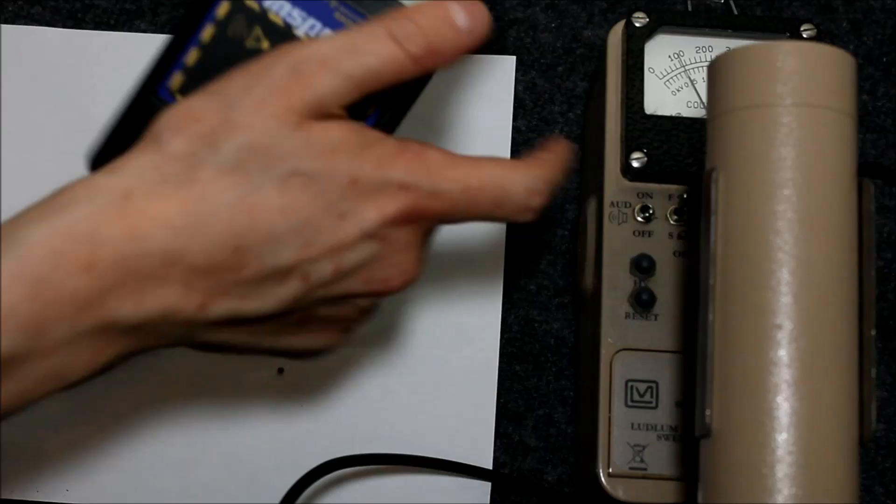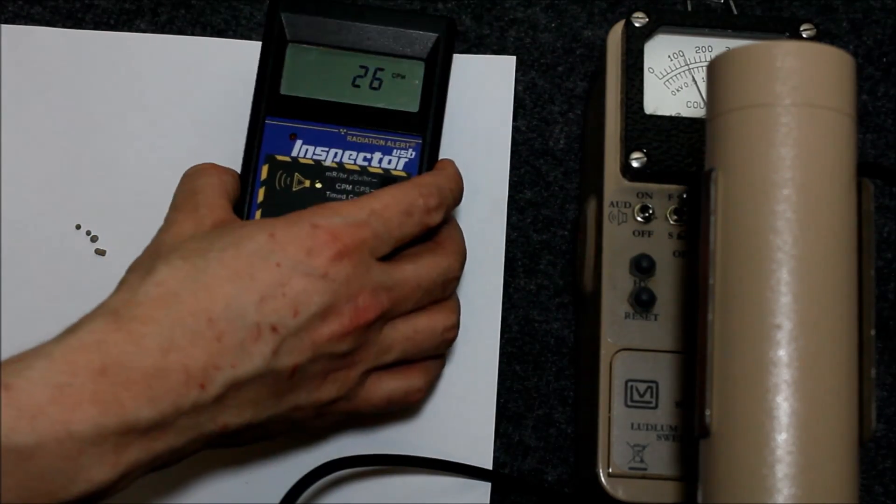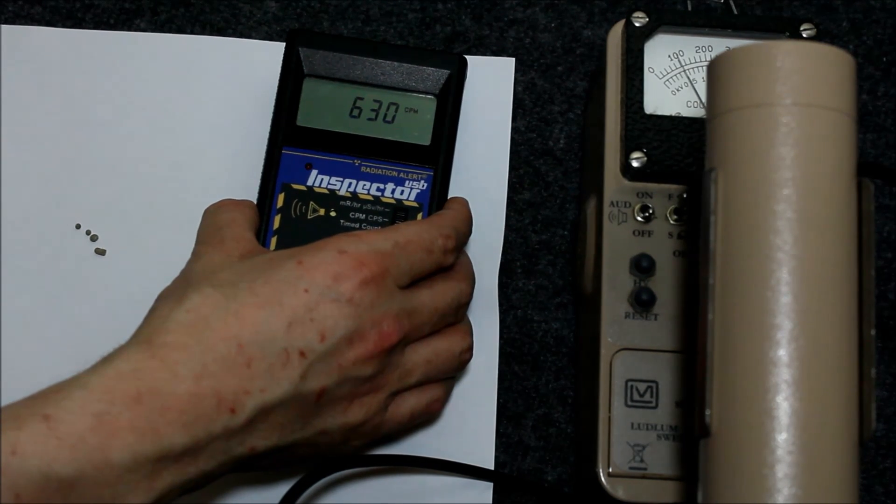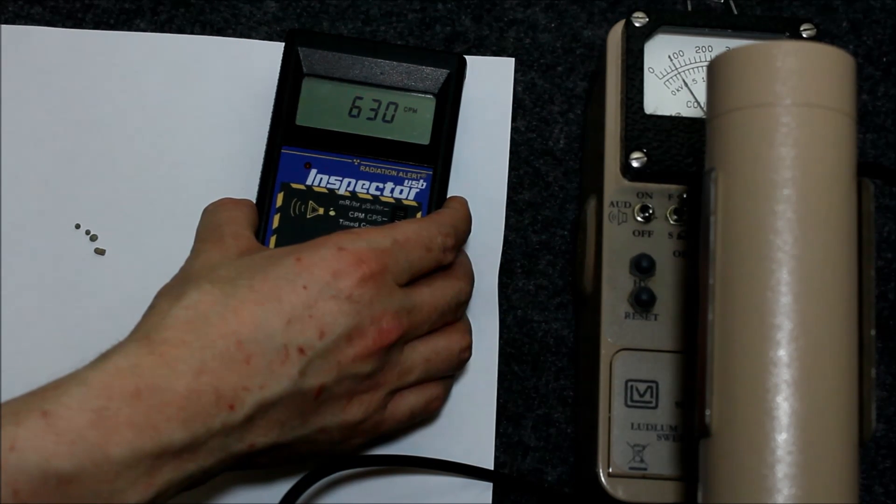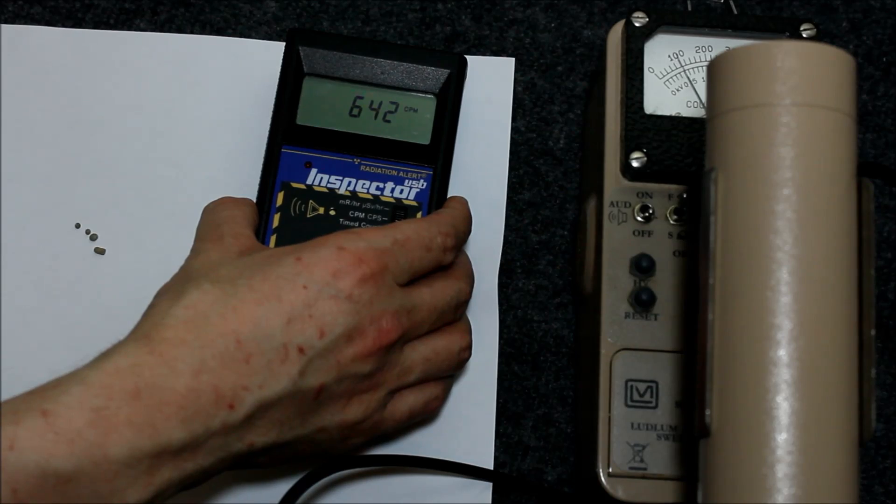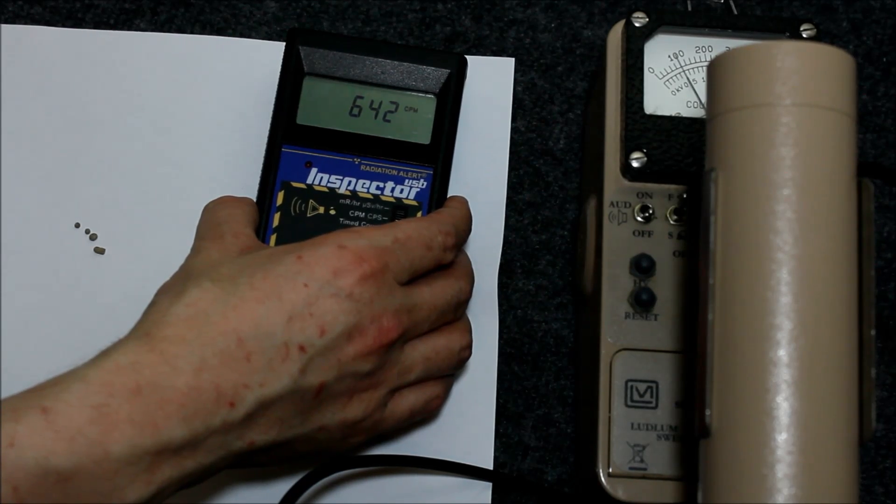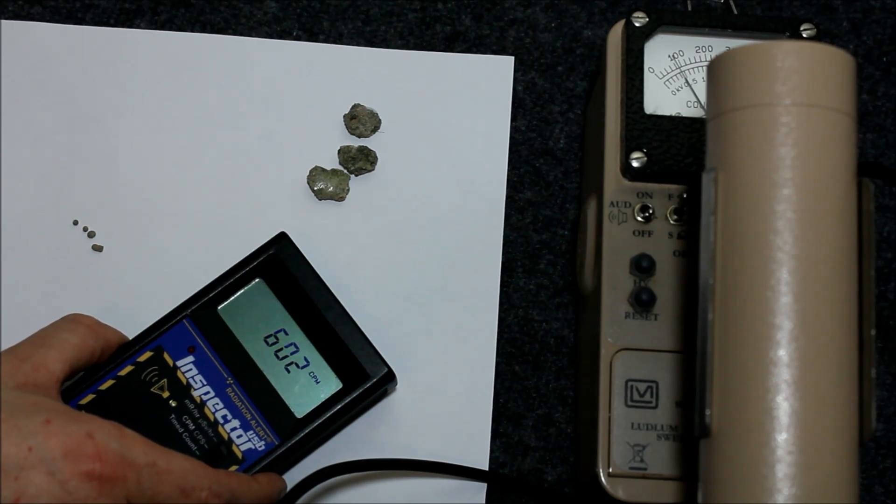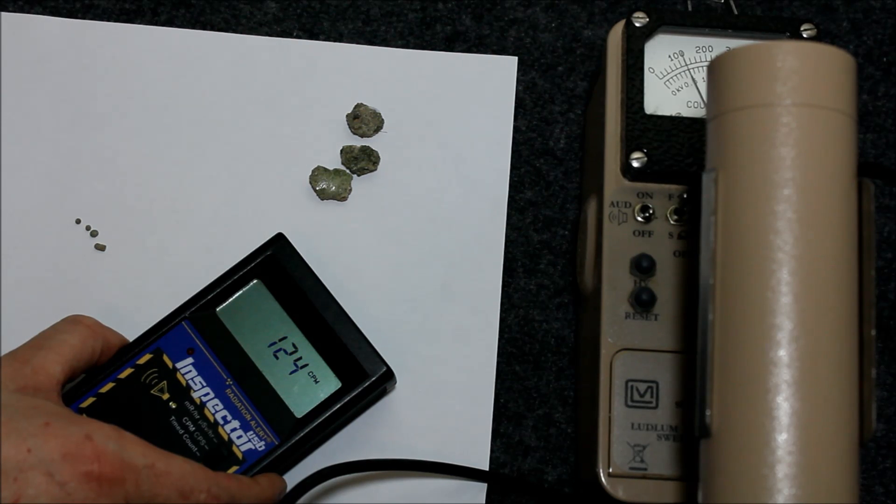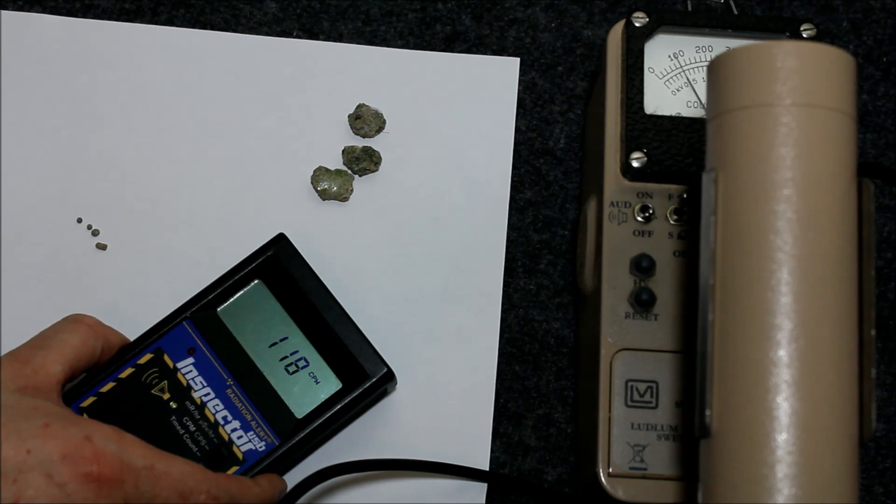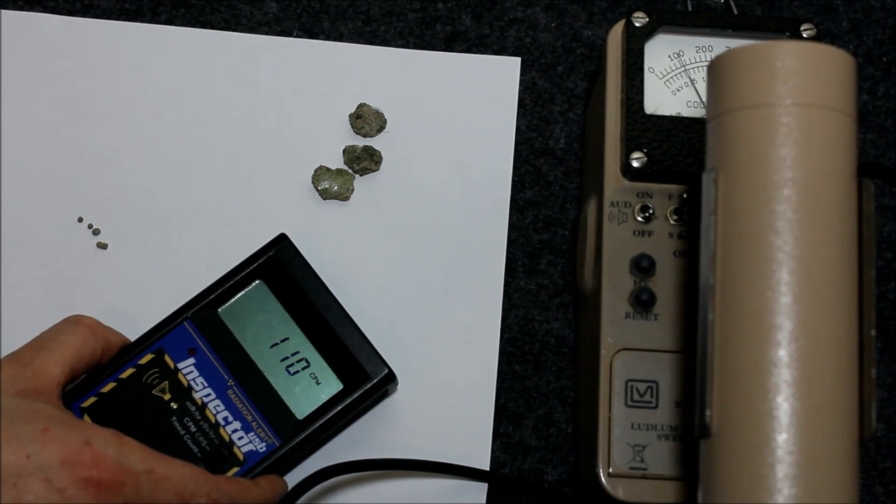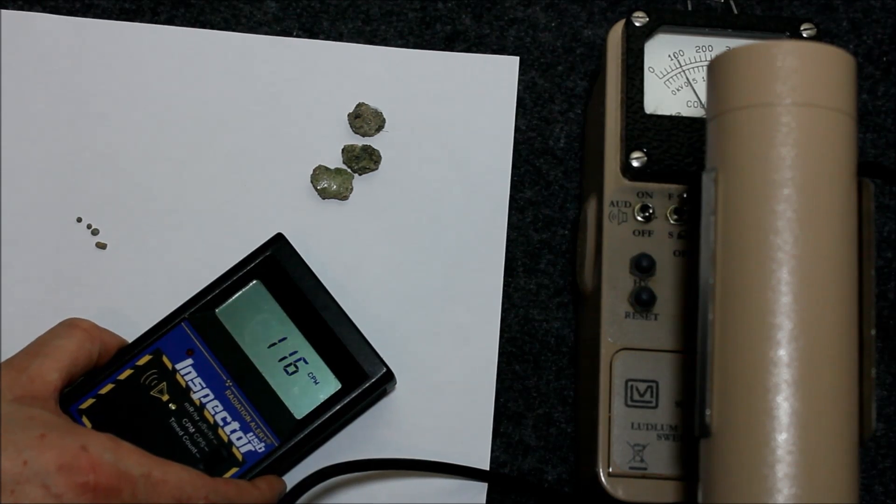When you put the Geiger counter over them, they are a little bit stronger. Let's test them individually. So let's start out with the big ones. Alright, so the big one gives me about 630 counts per minute plus or minus. Not bad. What about the tower? The tower gives a little bit over maybe 3, 4 times background radiation. It varies. We could be picking up a little bit of this but probably not much. It is pound for pound reasonably radioactive compared to the other two samples.